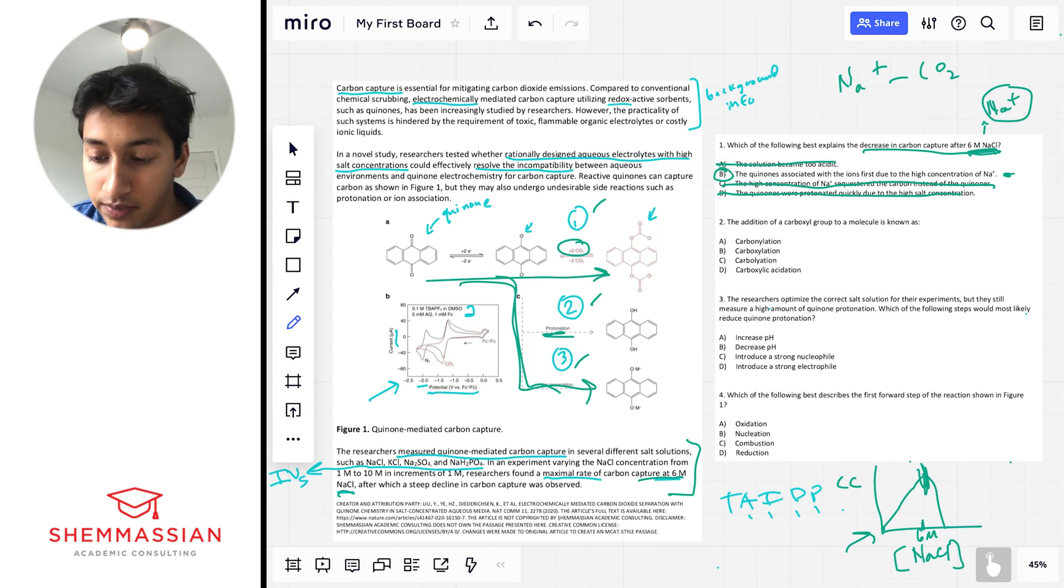Okay, let's look at question two. The addition of a carboxyl group to a molecule is known as? And so this is an example of a question that can really stand by itself, right? It doesn't really depend upon what's happening in the passage. And so this is kind of a memorization question. And the addition of a carboxyl group to a molecule, similar to what's happening here, is known as carboxylation, right? Carboxylation.